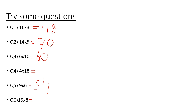Four lots of 18: double 18 is 36, then double 36 is 72. Multiplying by 4 is the same as doubling and then doubling again, because 4 is 2 times 2.